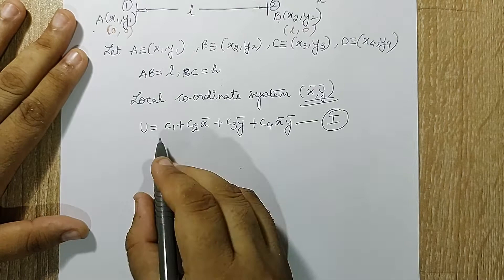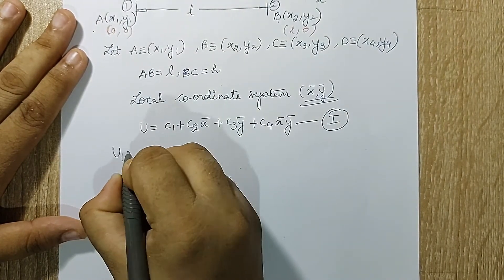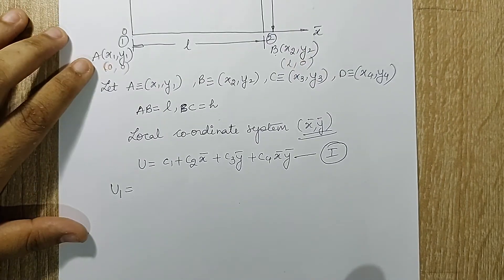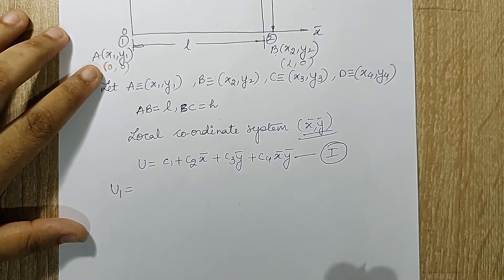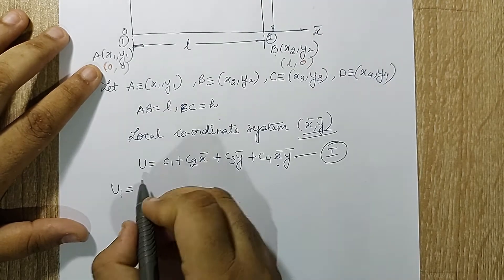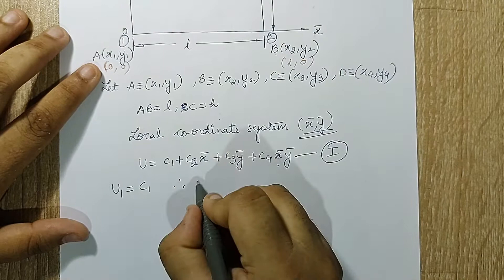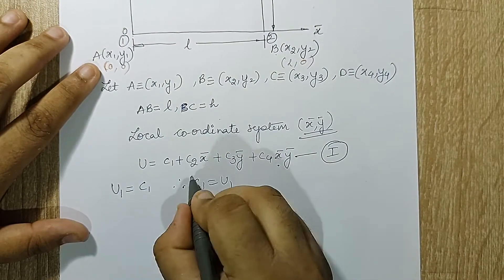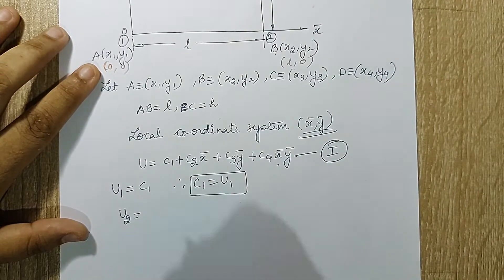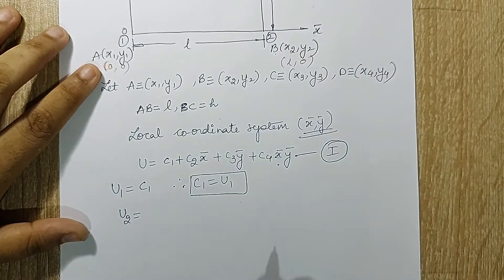When calculating displacement at each node: for node 1 at (0, 0), x-bar and y-bar are both zero. Substituting into equation one, what remains is only c1, so therefore c1 = u1.